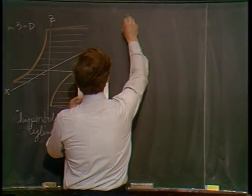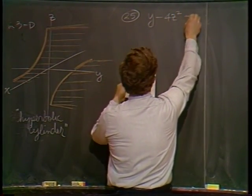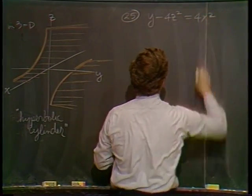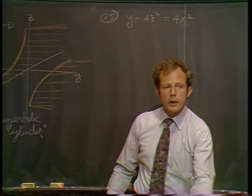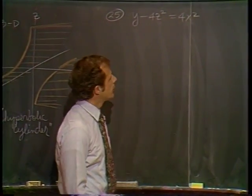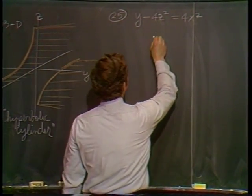The other problem was, I think, number 25, and that was y minus 4z squared equals 4x squared. As we do more and more of these, one is supposed to look at equations and perhaps recognize them for what they are.